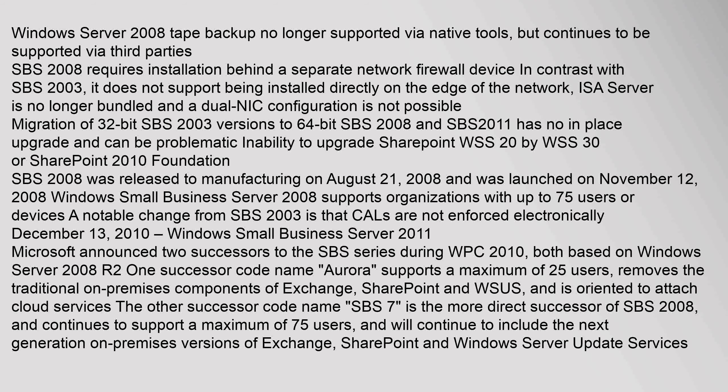SBS 2008 requires installation behind a separate network firewall device; in contrast with SBS 2003, it does not support being installed directly on the edge of the network — ISA Server is no longer bundled and a dual NIC configuration is not possible. Migration of 32-bit SBS 2003 versions to 64-bit SBS 2008 and SBS 2011 has no in-place upgrade and can be problematic. There is also an inability to upgrade SharePoint WSS 2.0 to WSS 3.0 or SharePoint 2010 Foundation.